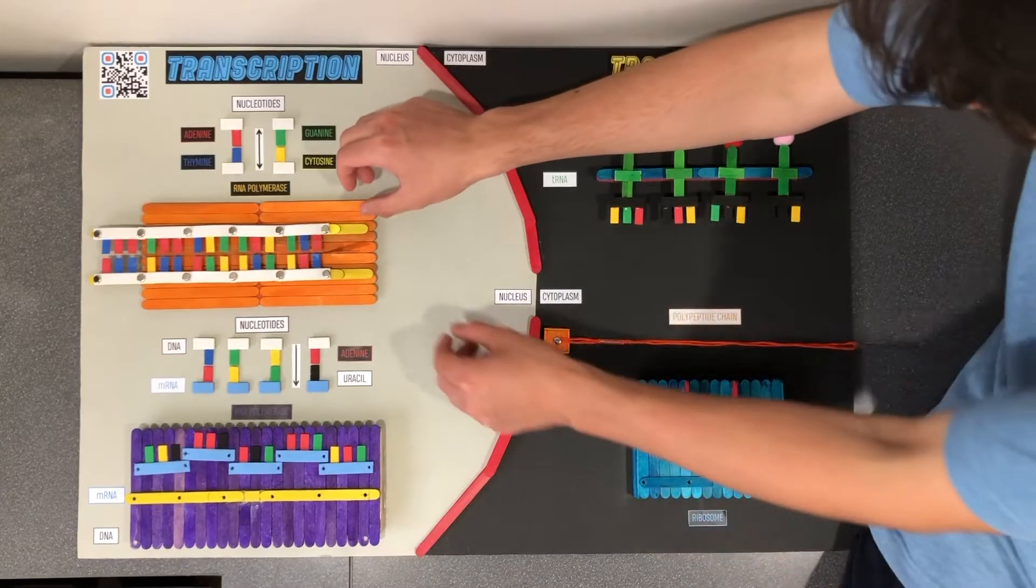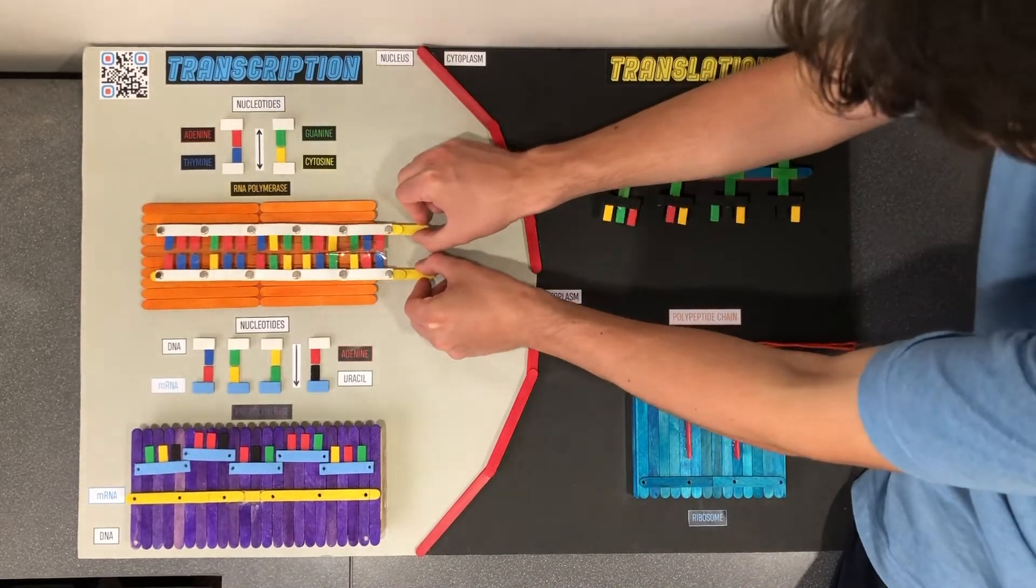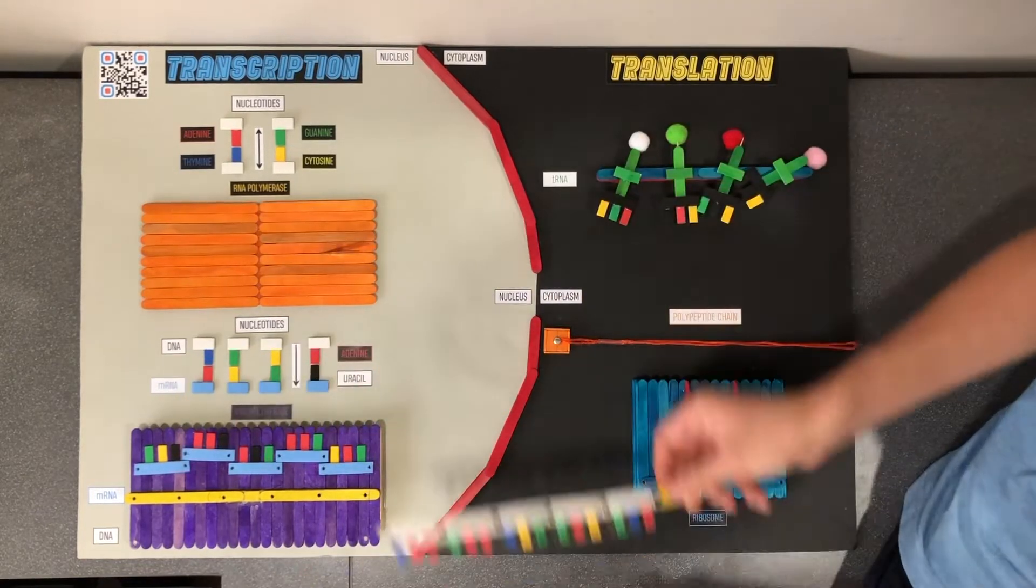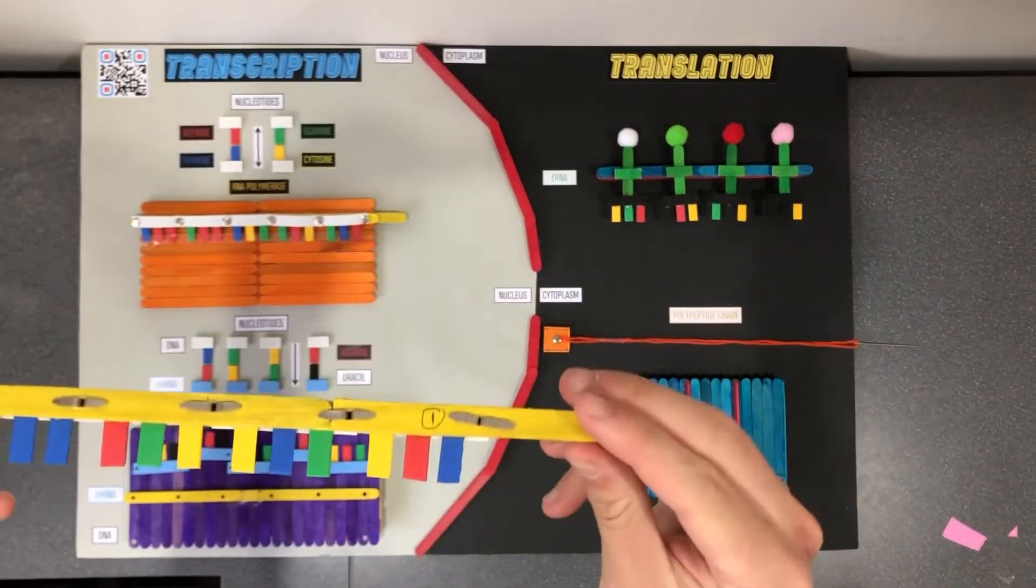The first part of transcription involves unzipping the DNA so that the two strands are separated. As indicated by the labels, the colorful foam pieces will represent the four nucleotide bases and the orange platform will embody the enzyme RNA polymerase.